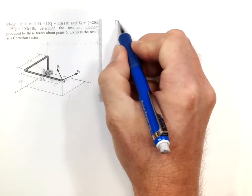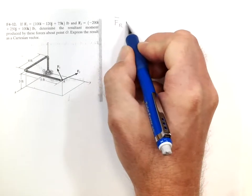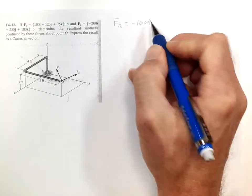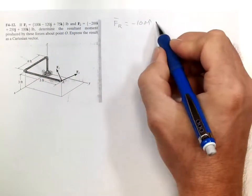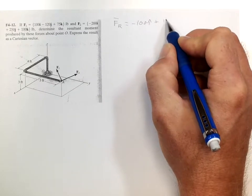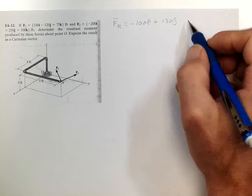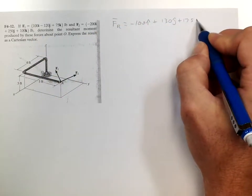So summing the two forces, the resultant force is negative 100 in the i, and positive 130 in the j, and then positive 175 in the k.